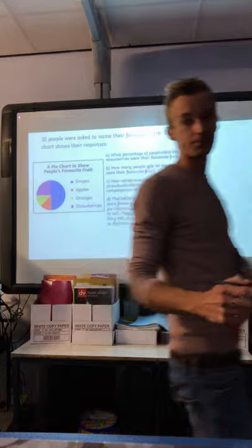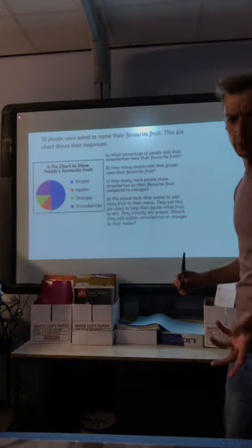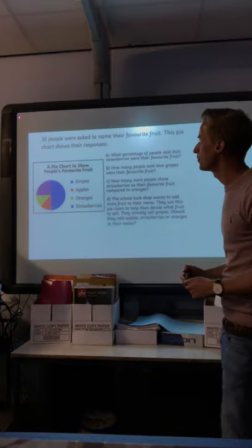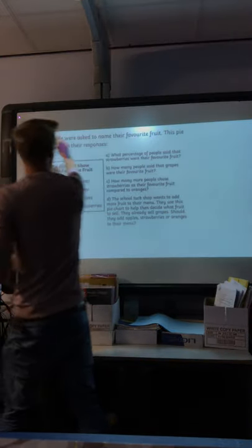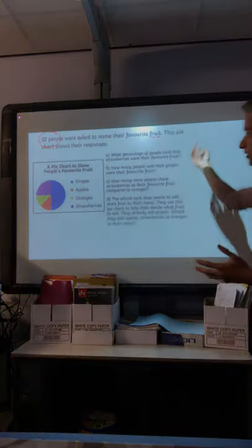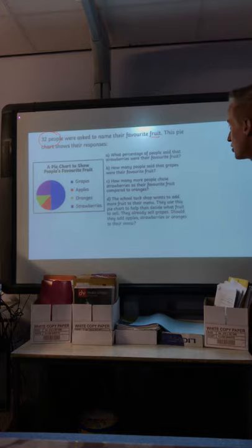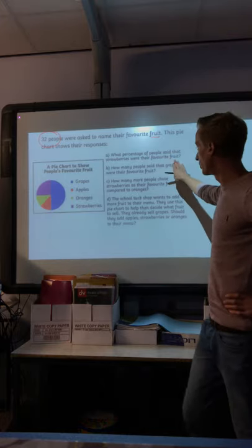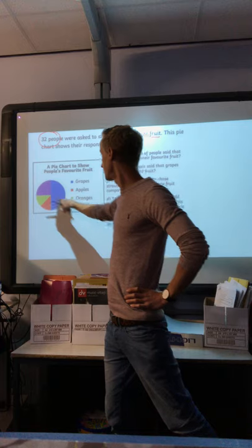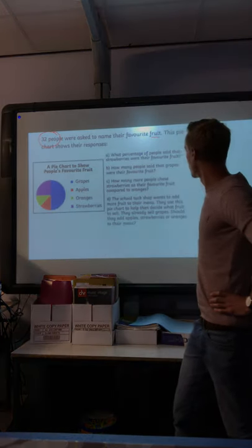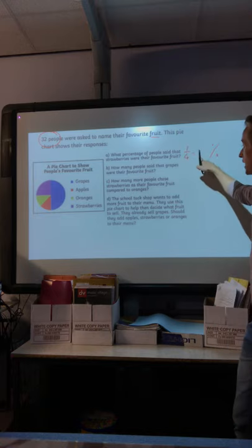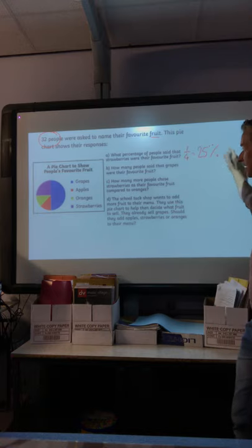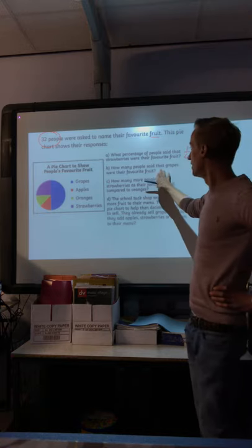Okay, a pie chart. I know it's a bit small on the board. You might want to look down at yours while I'm going through it. 32 people, that's important information. It's about different fruits. The pie chart shows the results. What percentage of people said strawberries were their favorite fruit? Strawberries, purple. Well, it was a quarter. My answer needs to be a percentage. One quarter as a percentage is 25%.